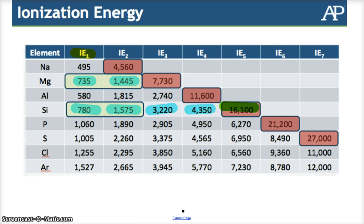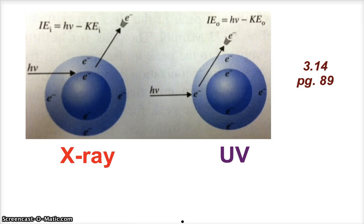But then things got better, and we have photoelectron spectroscopy. So a beam of atoms is shot into a device, and photons of energy are shot at the atomic beam. Electrons come out, and they eventually make their way to the detector.